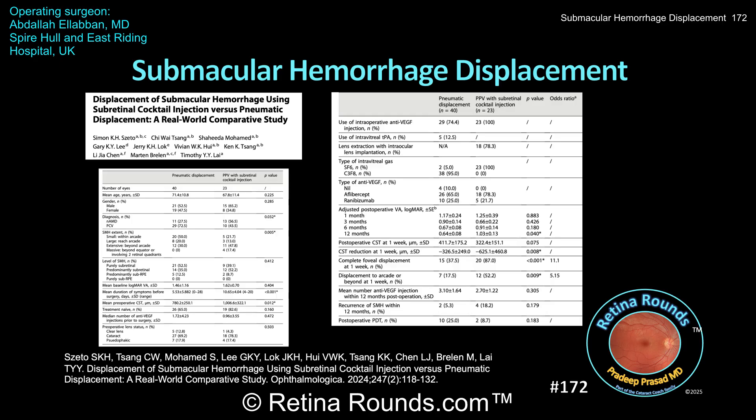In this retrospective study by Simon Zato and colleagues, the anatomic and functional outcomes of patients undergoing pneumatic displacement using intravitreal gas, with or without TPA and anti-VEGF, were compared to patients undergoing surgical displacement with a submacular injection of a cocktail of 50 micrograms of TPA in 0.4 milliliters, 0.05 milliliters of either aflibercept or ranibizumab, and 0.2 milliliters of filtered air, with a partial vitreous cavity air-fluid exchange and implantation of iso-expansile SF6. Patients undergoing surgical displacement were more likely to have hemorrhage from neovascular AMD, larger and more extensive submacular hemorrhage, and a longer mean duration of symptoms — about 10.5 days for the surgical group versus 5.5 days for the pneumatic group.